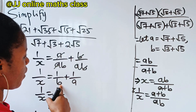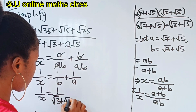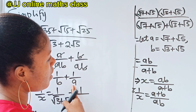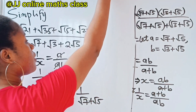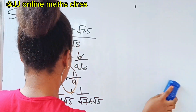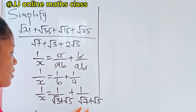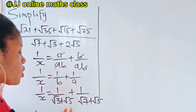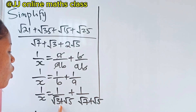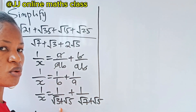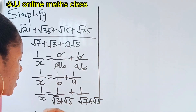So 1/x = 1/(√3 + √5) + 1/(√7 + √5). Now we need to rationalize each denominator. These are surds, so we cannot just add them — we use the conjugate of each denominator. The conjugate of (√3 + √5) is (√3 − √5).